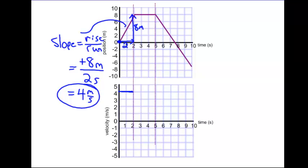Let's move on to the second segment. In the second segment here, you can see our starting position is at the eight meter mark, and we move along for three seconds. So our run is three seconds, but our rise is zero. So for this segment, our slope, which is equal to our rise over our run, for the second segment, the rise is zero meters, the run is three seconds, so our velocity is zero meters per second.